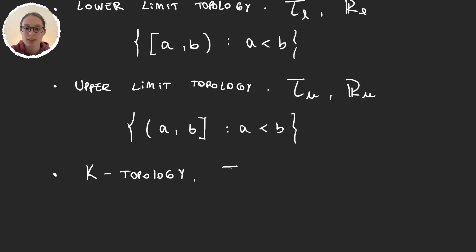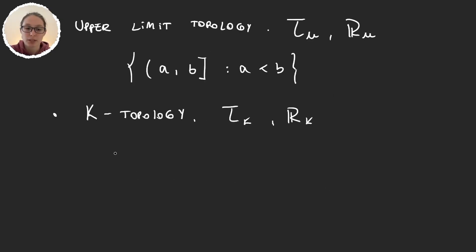Then we have the K-topology, denoted by τ_K or ℝ_K, and it's the one generated by the union of two sets. First we have the open intervals, and also the open intervals minus K, where K is the set of all the numbers of the form 1/n with n a natural number.